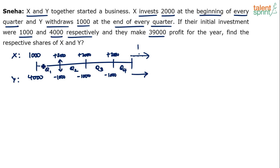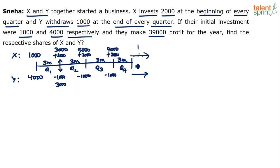What we need to understand is that for the first quarter — every quarter is three months — investments were 1,000 and 4,000 respectively. For the next three months (Q2), X's investment is 1,000 + 2,000 = 3,000 rupees, and Y's investment is 4,000 − 1,000 = 3,000 rupees. From Q3 onwards, X's investment is 3,000 + 2,000 = 5,000 rupees, and for Q4 it's 5,000 + 2,000 = 7,000 rupees. Y's investment: 3,000 in Q2, then 3,000 − 1,000 = 2,000 in Q3, and 2,000 − 1,000 = 1,000 in Q4.